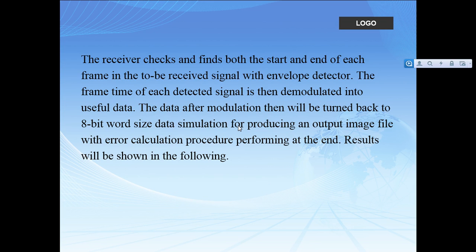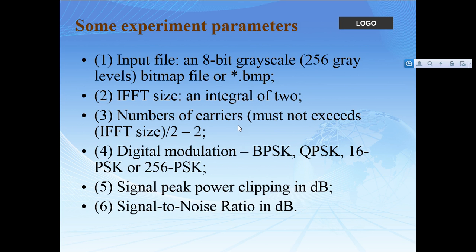The receiver then checks and finds both the start and end of each frame in the received signal using an envelope detector. This means the receiver detects what it receives and decides if it can transform those bits into a picture. The data after demodulation is then turned back into 8-bit data, producing an output image file with an error calculation procedure. Essentially we take a picture as input, do some processing, and output an image file.